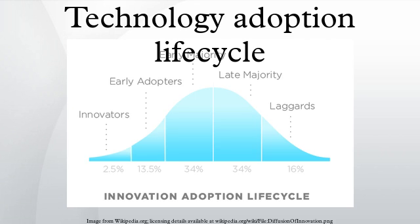The technology adoption life cycle is a sociological model that is an extension of an earlier model called the diffusion process, which was originally published in 1957 by Joe M. Bolland, George M. Beale, and Everett M. Rogers at Iowa State University. It was originally published only for its application to agriculture and home economics, building on earlier research conducted by Neil C. Gross and Bryce Ryan.